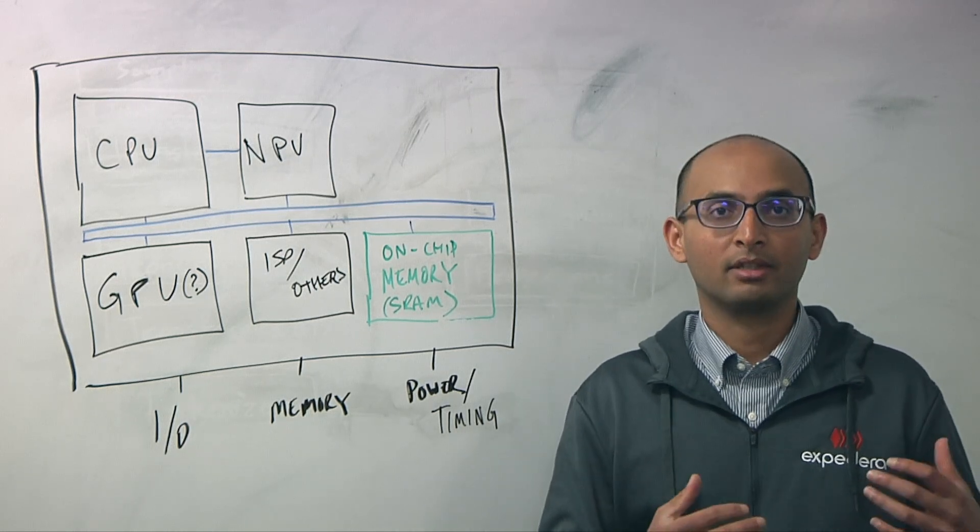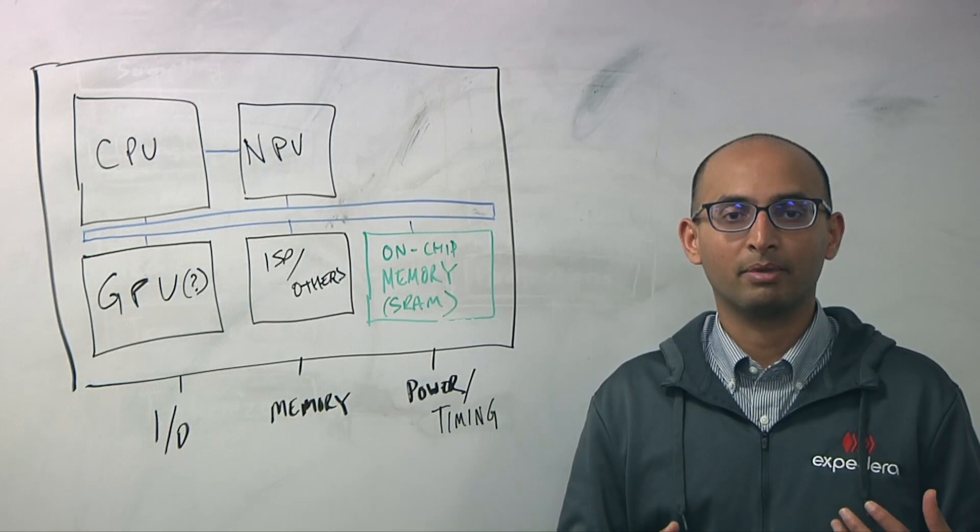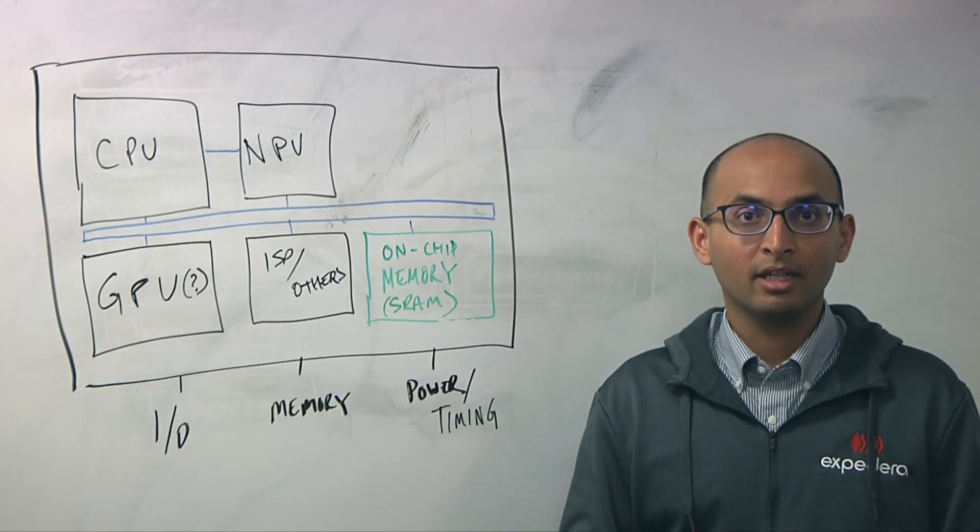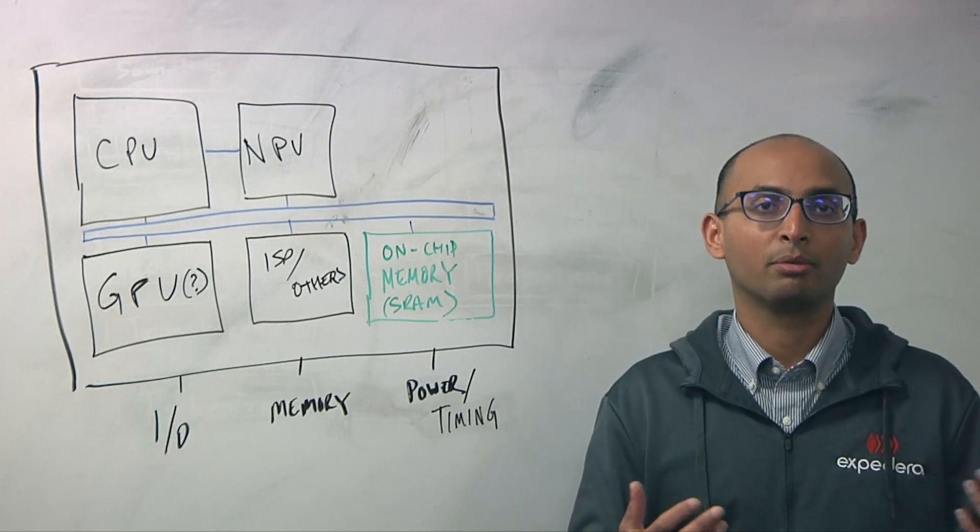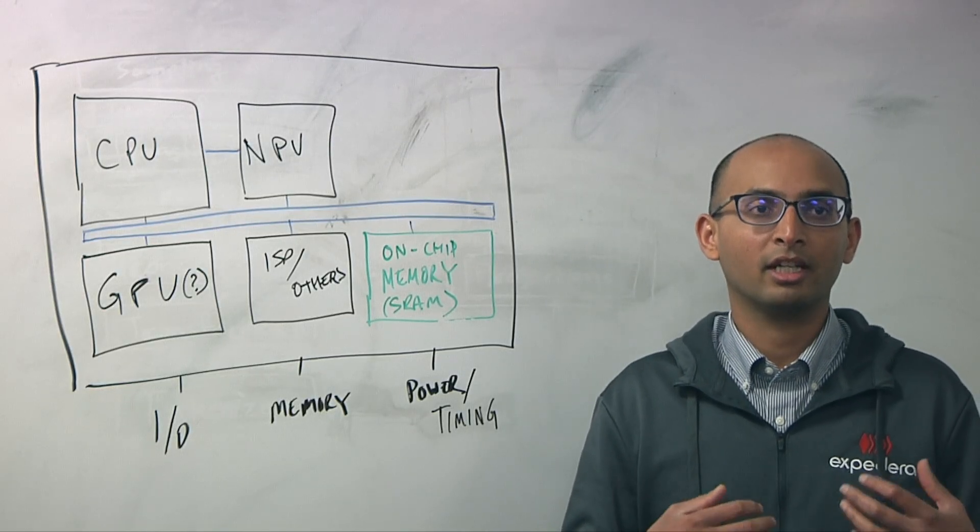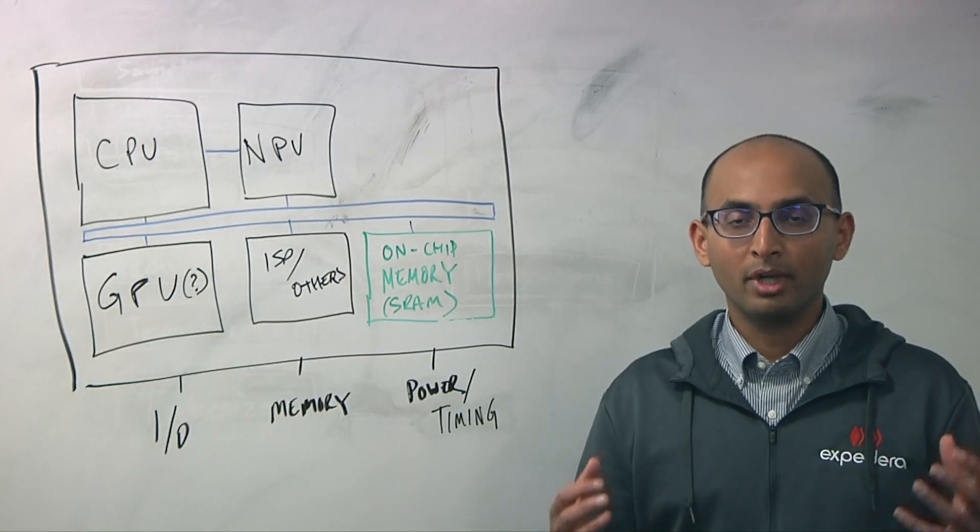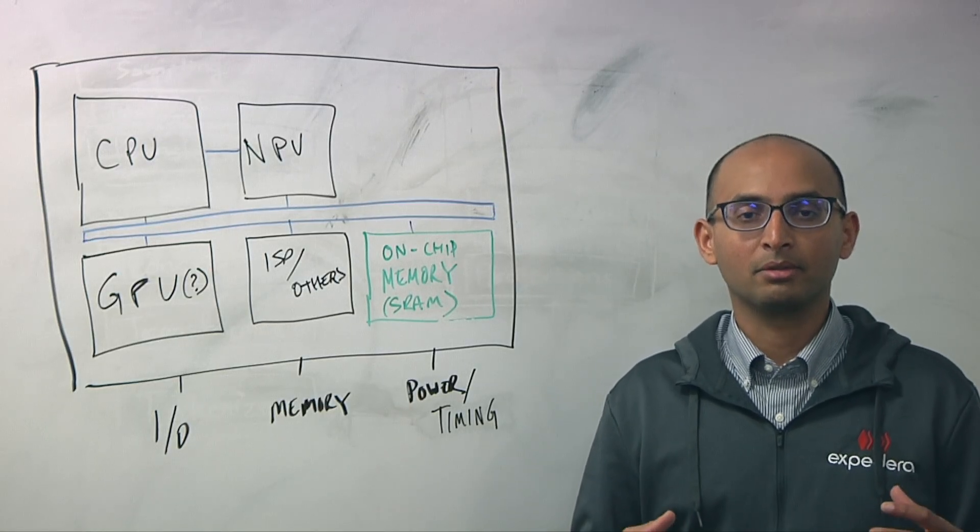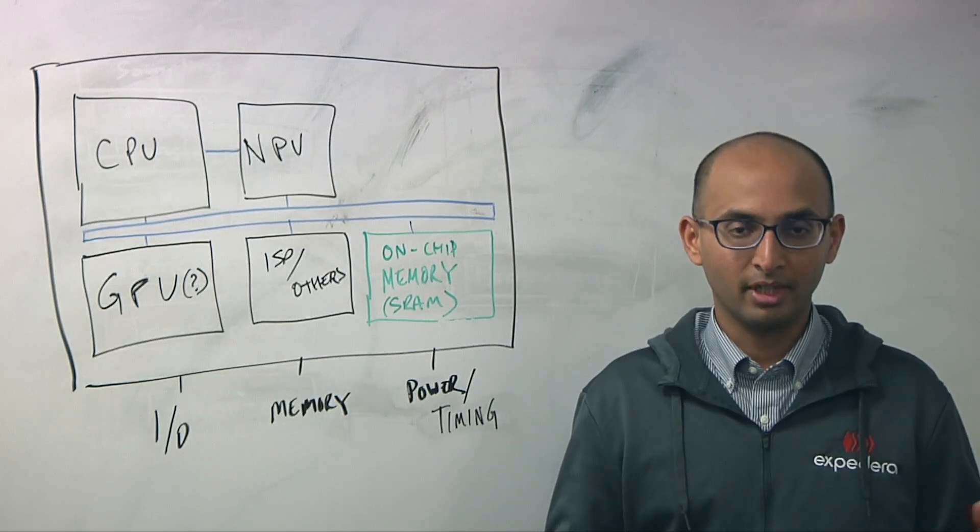There are also user experience level requirements. For example, if you are processing image generation task, the question is, can we generate the image within one or two seconds so that user can see a responsiveness in terms of applications. And so from workload perspective, this comes down to how fast do we need to actually support the entire set of neural networks.